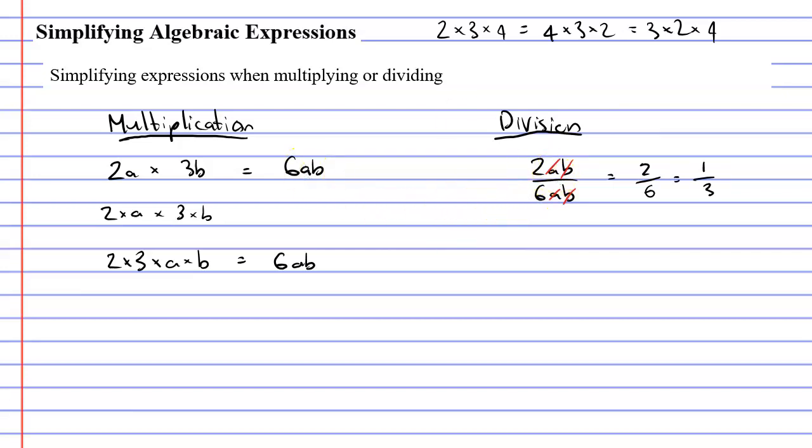Now why is it that we're allowed to do this? Why are we allowed to cancel the same pronumeral above as we do below? Well you might remember when you look back at our basic rules with fractions, that you're allowed to multiply and divide the top and the bottom of the fraction by the same thing. For example, if I had the fraction 1 over 2, I can multiply both the top and the bottom by 3. And when I do that, I get 3 over 6. When you look at these two fractions, they're actually the same. One half is exactly the same as 3 over 6.